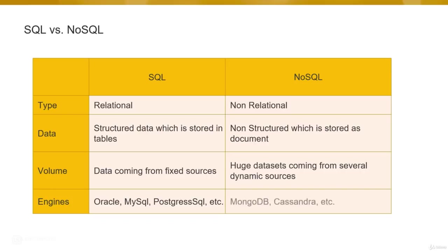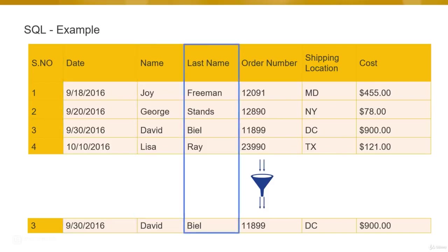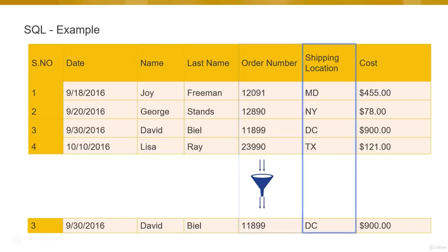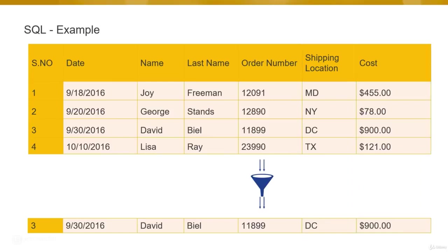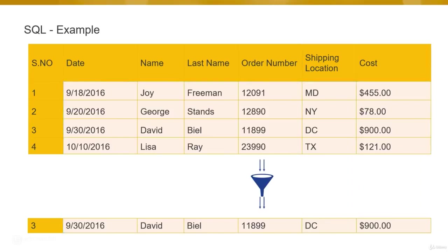Now that we know what a NoSQL database is, the AWS service that supports NoSQL is DynamoDB. For SQL databases, it is the Relational Database Service — a separate service. DynamoDB is AWS's own product for saving data as NoSQL. It is a fully managed NoSQL database service providing fast single-digit millisecond latency performance, easy administration, and is very cost-effective.